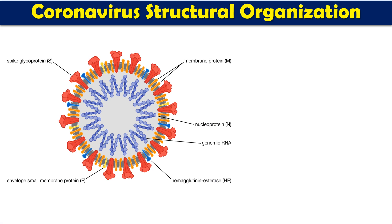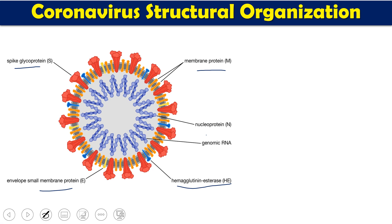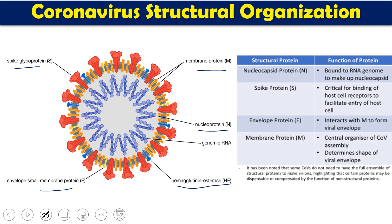The coronavirus is a virus particle which has an envelope covering its capsid. It has many different proteins — spike proteins, membrane protein, hemagglutinin-esterase proteins, and E protein. Inside the capsid it has a single-stranded positive-sense RNA which is also associated with nucleoproteins.